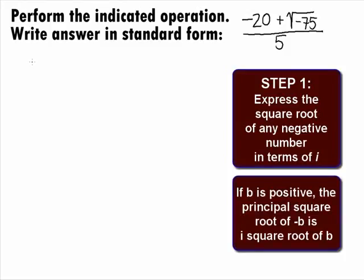It states that if b is a positive real number, then the square root of negative b is equal to i square root of b. This uses the fact that the square root of negative 1 is i.